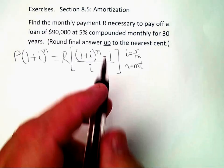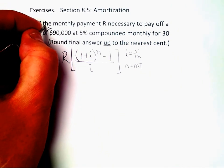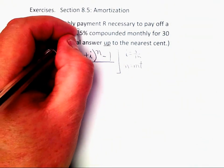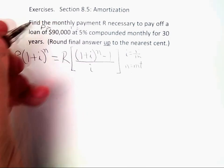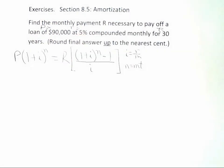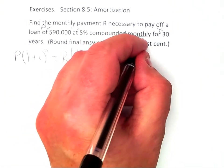It would be helpful to identify everything. We're looking for capital R, but we know that the present value is $90,000 because the present value is always the amount of the loan. Little r is the annual interest rate, so that's 5%, and t is 30 for 30 years, and we're compounding monthly, so m is 12.